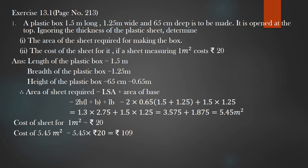Based on the LSA and TSA of a cube and cuboid, let us start Exercise 13.1 on page 213. Question 1: A plastic box 1.5 m long, 1.25 m wide, and 65 cm deep is to be made. It is opened at the top. Ignoring the thickness of the plastic sheet, determine the area of the sheet required for making the box, and also find the cost if a sheet measuring 1 m² costs ₹20. The plastic box is in the shape of a cuboid. Length = 1.5 m, breadth = 1.25 m, height = 65 cm.